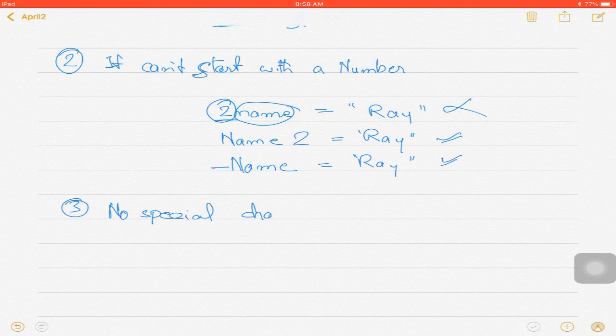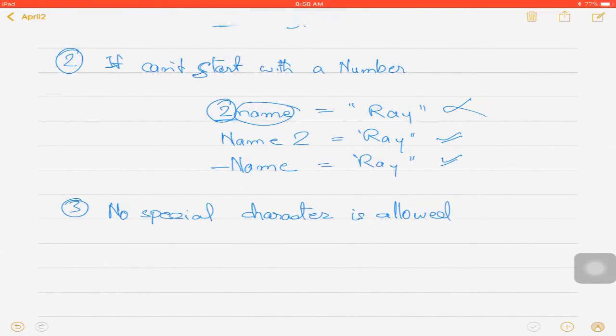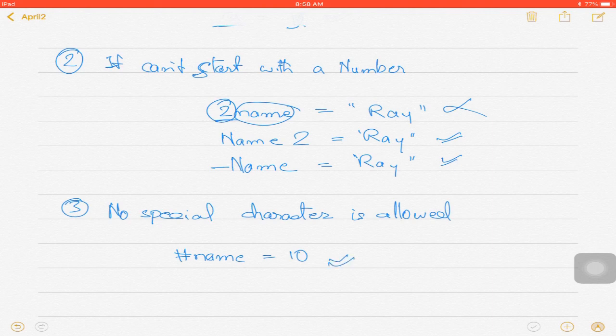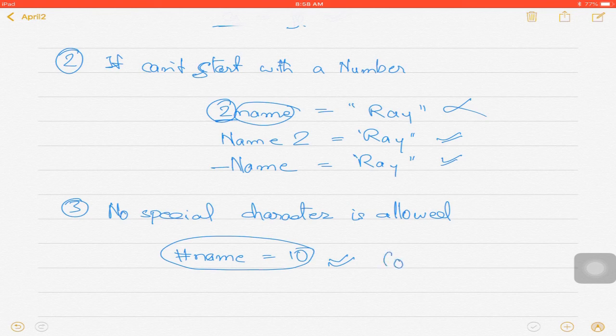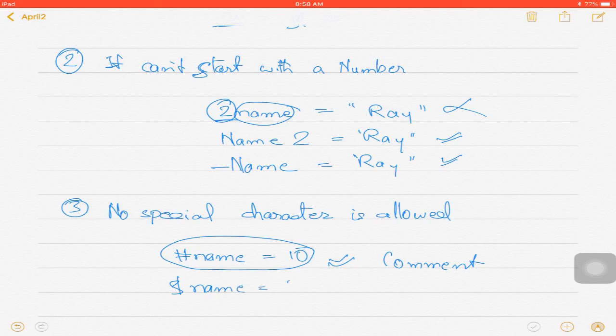The next point is that no special character is allowed. I cannot write something of that sort like '#name is equal to 10,' though it can be used, but again it will not be an identifier, it will become something of a comment. No special symbols—I cannot use '$name is equal to 30,' something of that sort. It's not doable. If I write 'name.day is equal to whatever,' Sunday maybe...